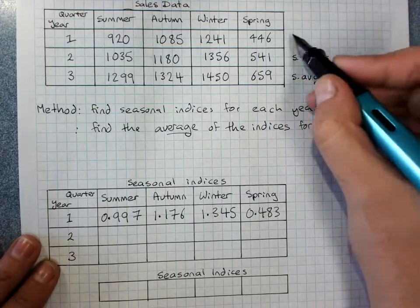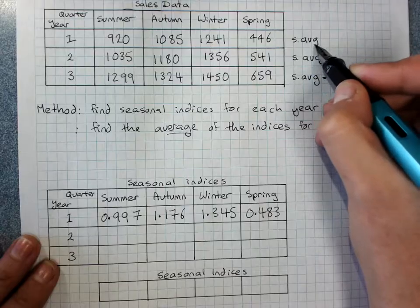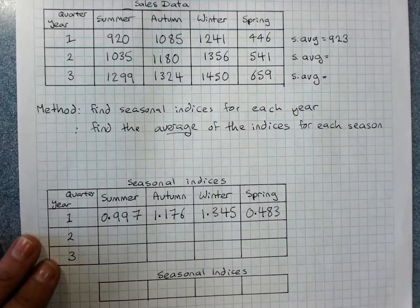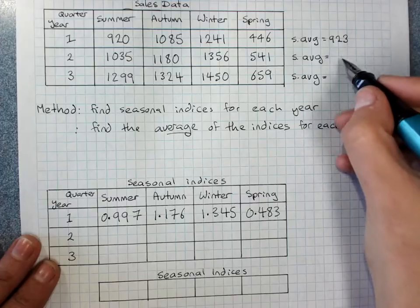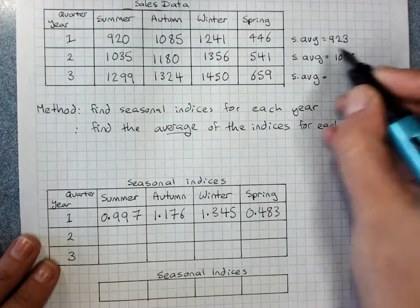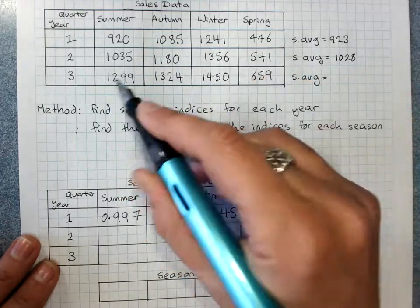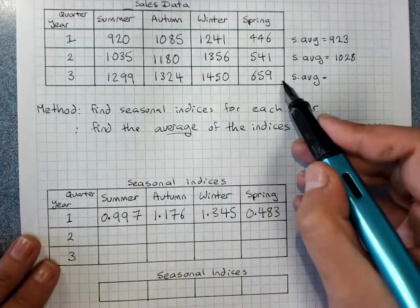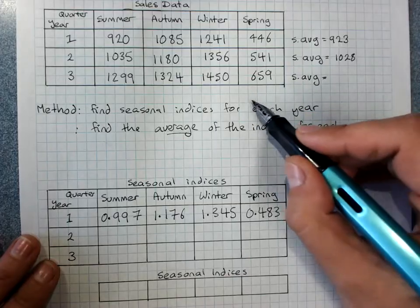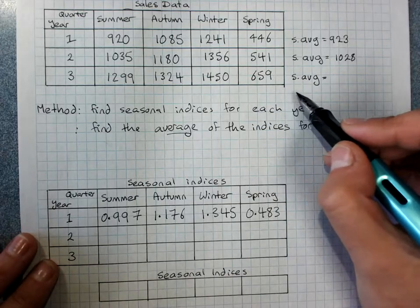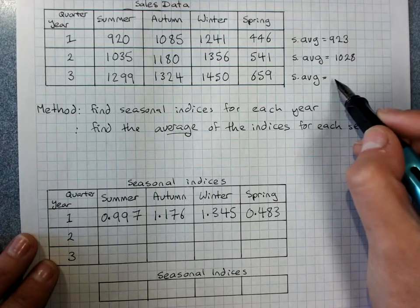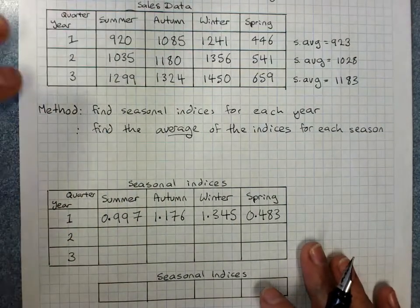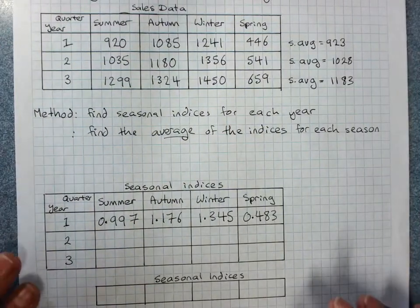We've already found year one's seasonal indices. We also need to find years two and three using exactly the same method. For year two, find the seasonal average by adding the four values and dividing by four — that gives 1028. For year three, same process, giving a seasonal average of 1183.